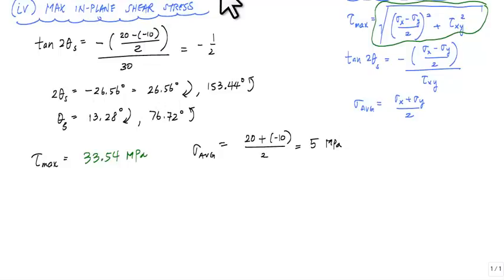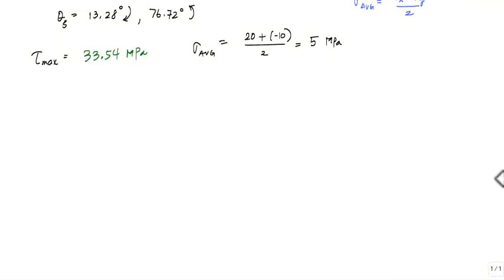All I've got to do now is draw my representative volume element. I start that by drawing a line representing my 0 degrees, which in this case was horizontal. The face I want to look at is 13.28 degrees going clockwise. So I'm going to go down 13.28 degrees. Now I'm going to complete the square, first line being perpendicular to this 13.28 degree axis.